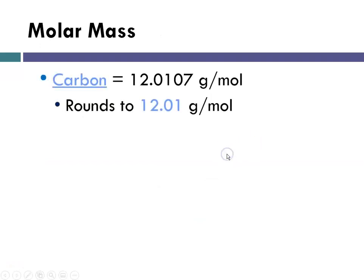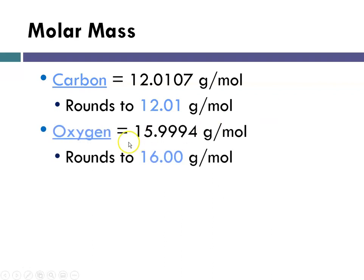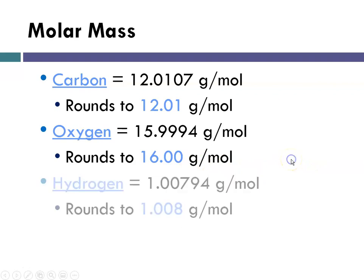So carbon on the periodic table is listed as 12.0107 grams per mole. Rounding to the hundredths place would give me 12.01 grams per mole for atomic mass for carbon. Oxygen, 15.9994, rounded to the hundredths place will be 16.00 grams per mole, reading off of the periodic table. And hydrogen, 1.00794 is going to round to 1.008. So as we do these and as we use them for calculations, we're going to have to be careful to always round to the hundredths place.